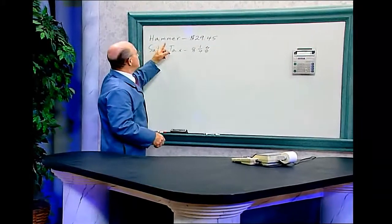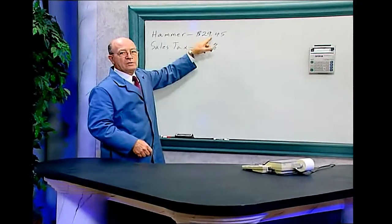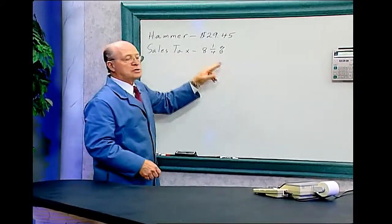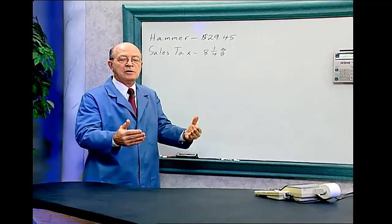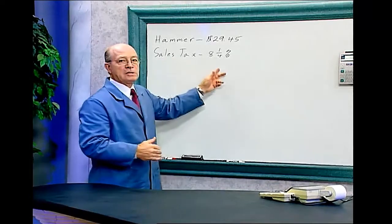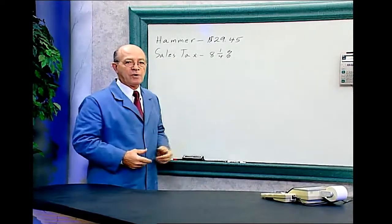We have a hammer that sells for twenty-nine dollars and forty-five cents. And the sales tax is eight and a quarter percent. So we have to add that on. Before with the sale, we deduct the amount, but with sales tax, the government wants that money from us.